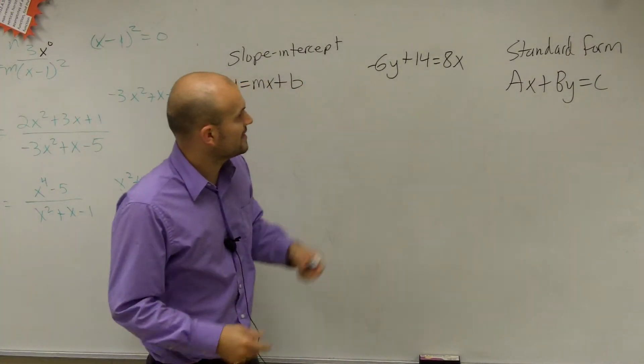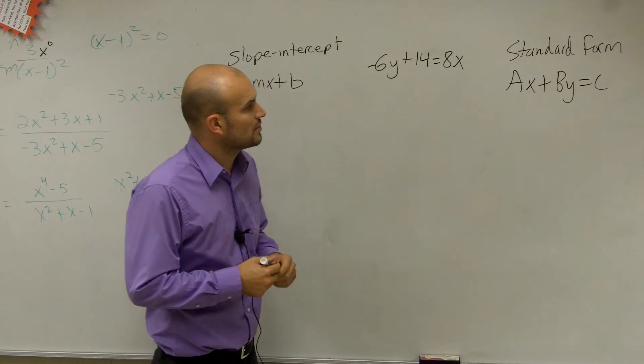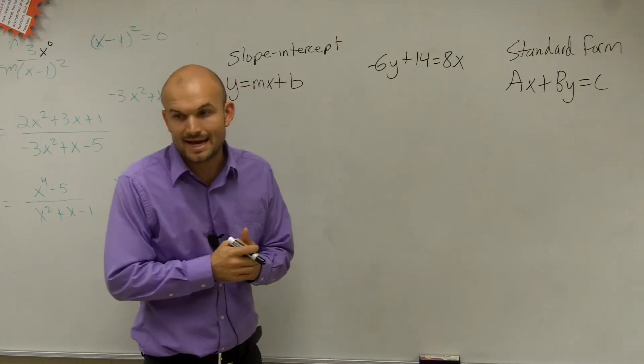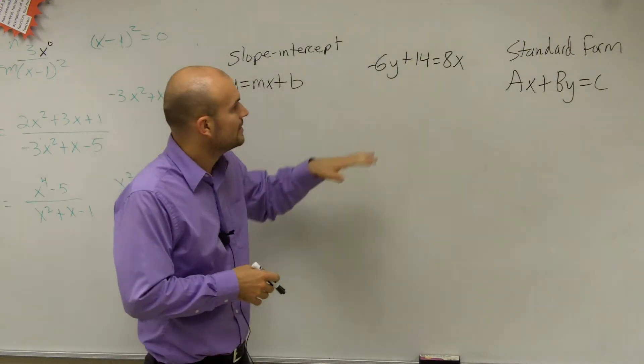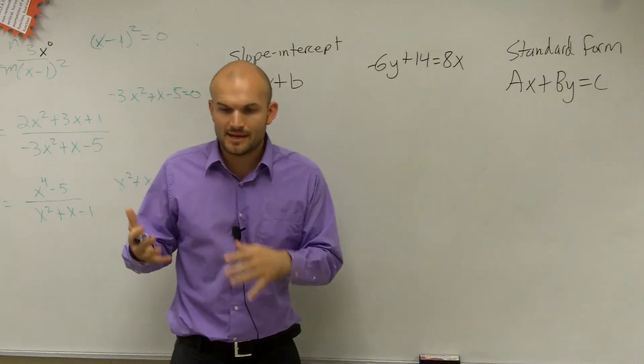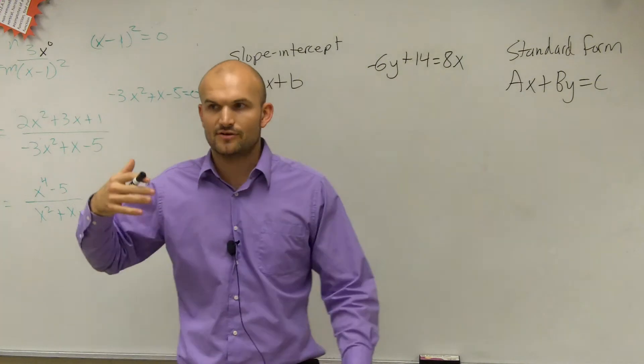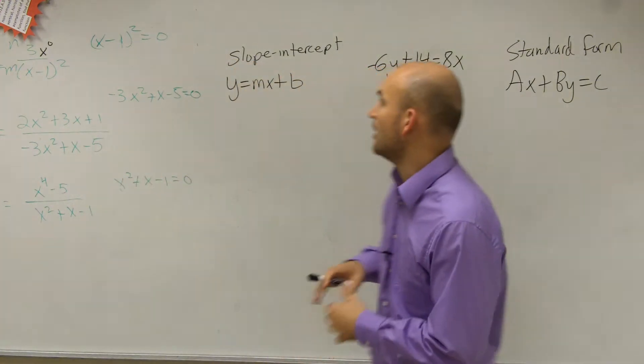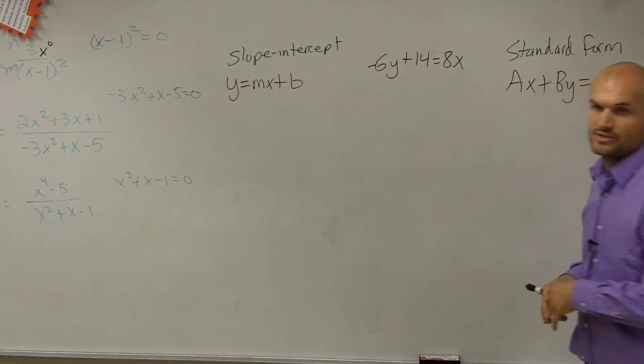So here's what we have. We have negative 6y plus 14 equals 8x. What we need to do is — I labeled — we have our standard form and we have our slope-intercept form.